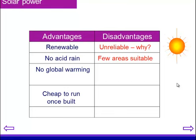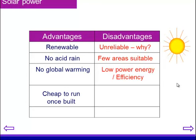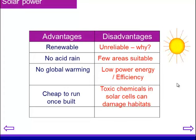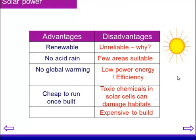Few areas are suitable — finding places in the world with enough sunlight is actually quite limited. There are low power energy efficiency ratings. Toxic chemicals in solar cells, such as phosphorus and boron, can damage habitats, so those are chemicals you don't want distributed into the environment. And they're pretty expensive to build in the first place — although as the drive to find a replacement for fossil fuels continues, the science is developing cheaper and cheaper versions every day, making this more and more cost efficient.